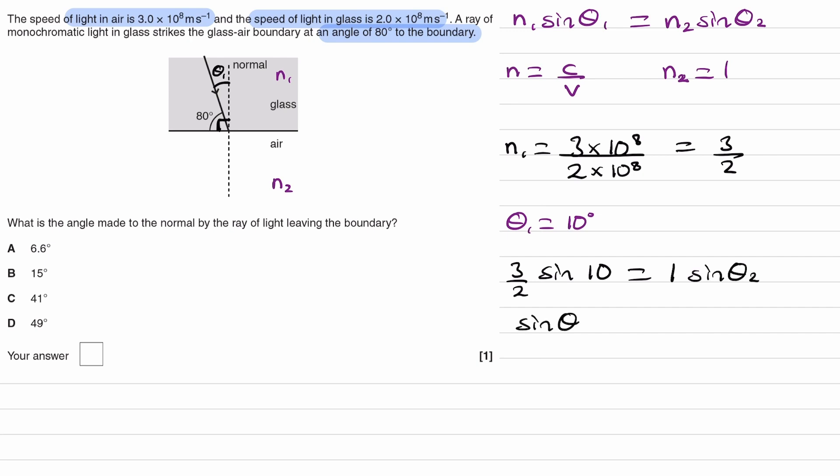Sine theta 2 is equal to 1.5 sine 10, which is 0.2604. That's sine theta 2, and then do inverse sine of that.